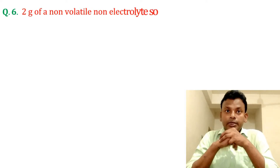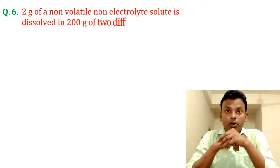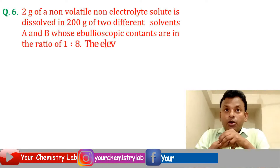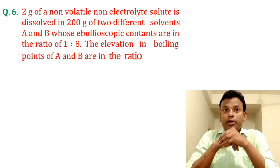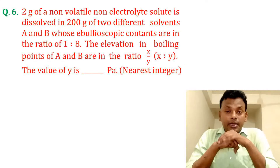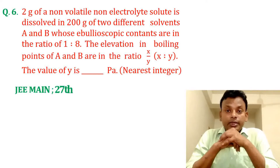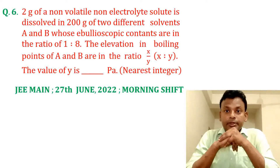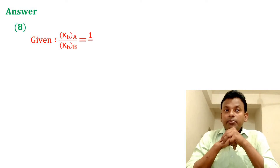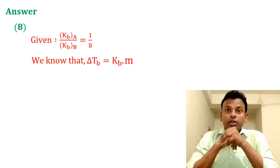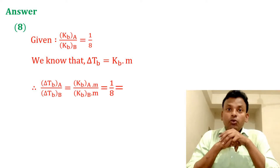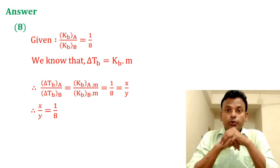Question 6: 2 gram of a non-volatile non-electrolyte solute is dissolved in 200 gram of two different solvents A and B, whose ebullioscopic constants are in the ratio 1:8. The elevation in boiling point of A and B are in the ratio x/y. The value of y is dash (nearest integer). This question was set in JEE Main 27th June 2022 morning shift. Answer is 8. Given K_bA/K_bB = 1/8. Since ΔT_b = K_b × m, the ratio x/y = 1/8, so y = 8.